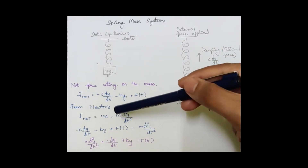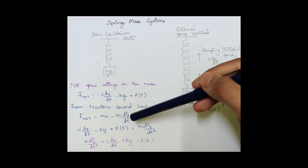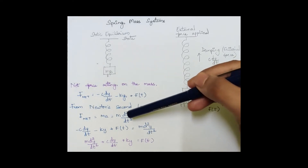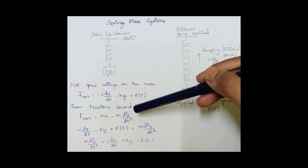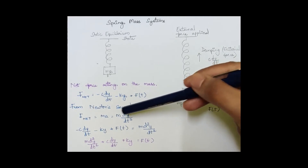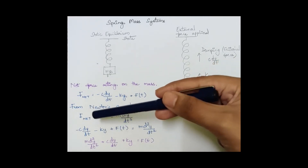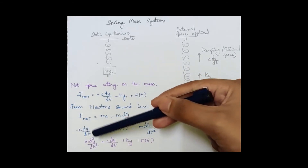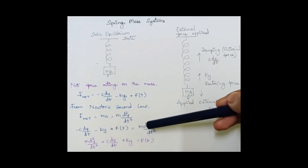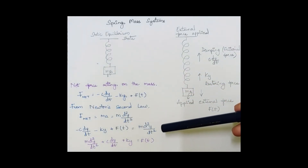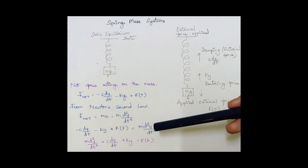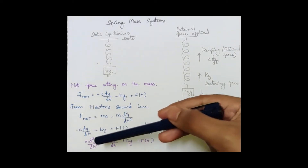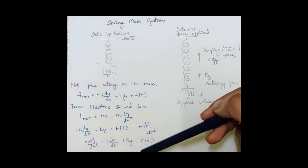From Newton's second law, the net force equals mass times acceleration, where acceleration is d²y/dt² and y is the displacement. Substituting, we get: −c·dy/dt − ky + f(t) = m·d²y/dt². Simplifying, the general equation for a spring-mass system is: m·d²y/dt² + c·dy/dt + ky = f(t).